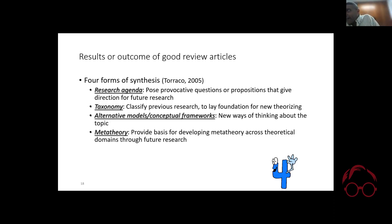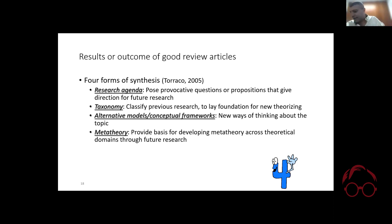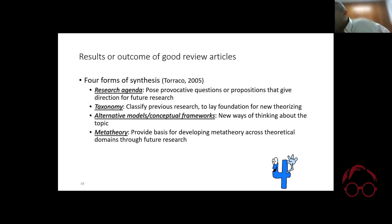The worst outcome you can have is: here are the best authors, here are the best schools, here is the most cited article, here are the trending articles, and here are the biblioshiny clusters with some colorful clusters. That's not enough. You could think about it as if you were writing an empirical paper and just stopped at the descriptive statistics and correlation tables — that's a severely deficient paper.